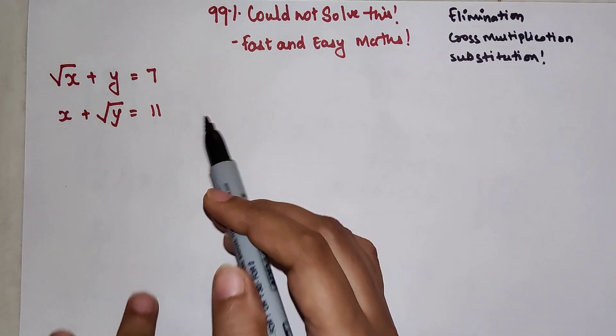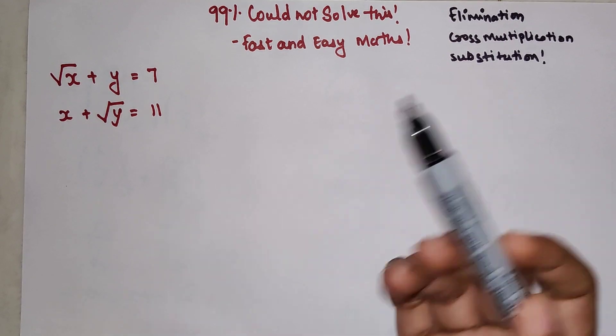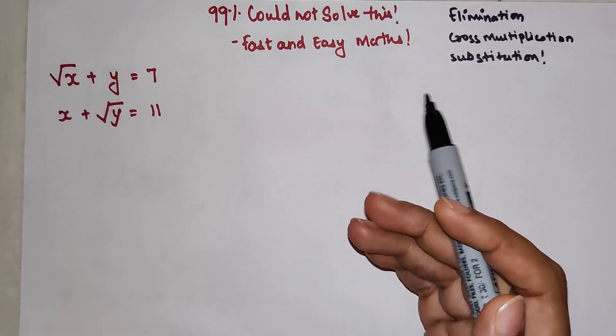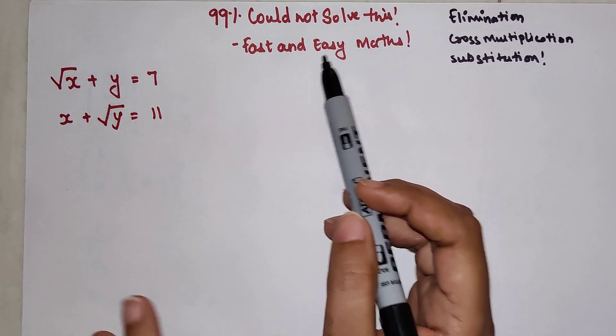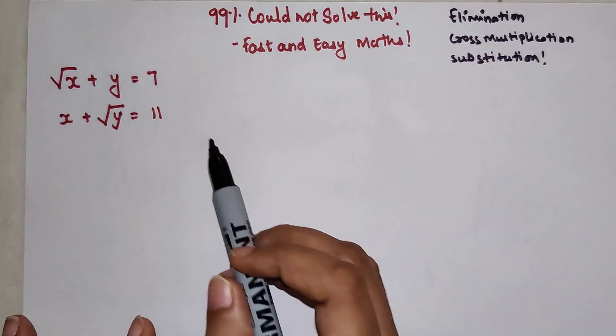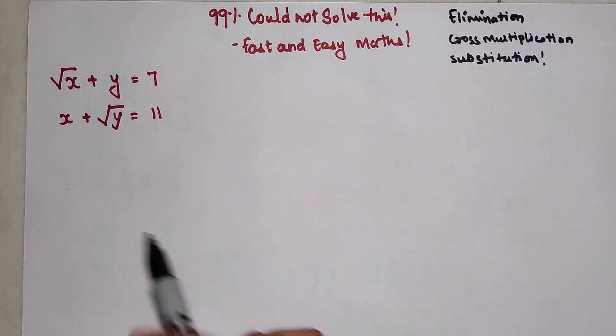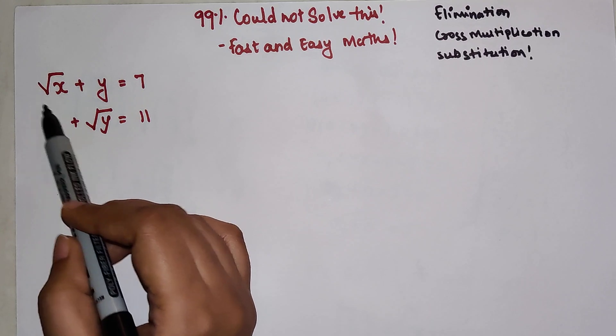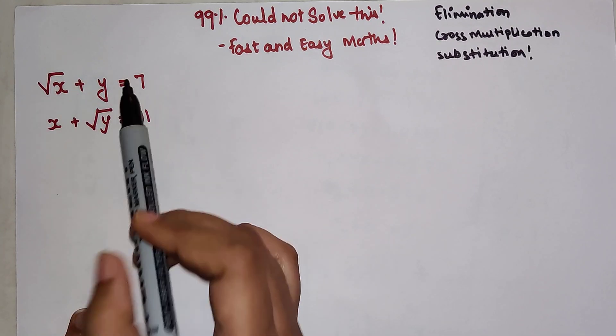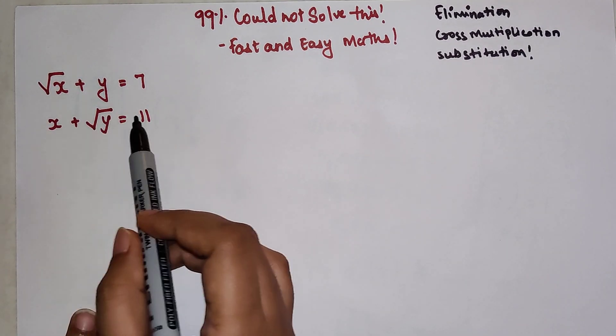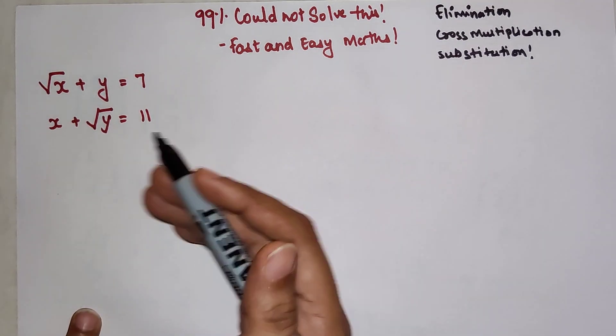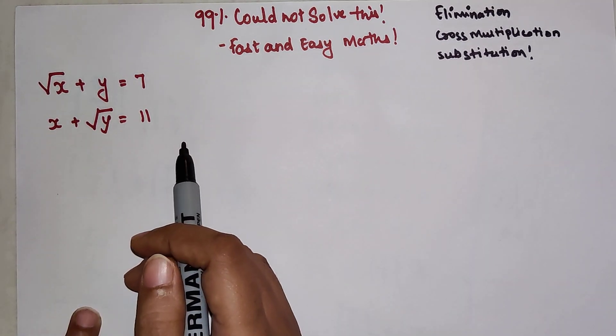This problem was posted by Mr. Ramanujan, and as we know he was a genius. 99% could not solve this problem. The question is: root of x plus y equals 7, and x plus root y equals 11, and we need to find the value of x and y.